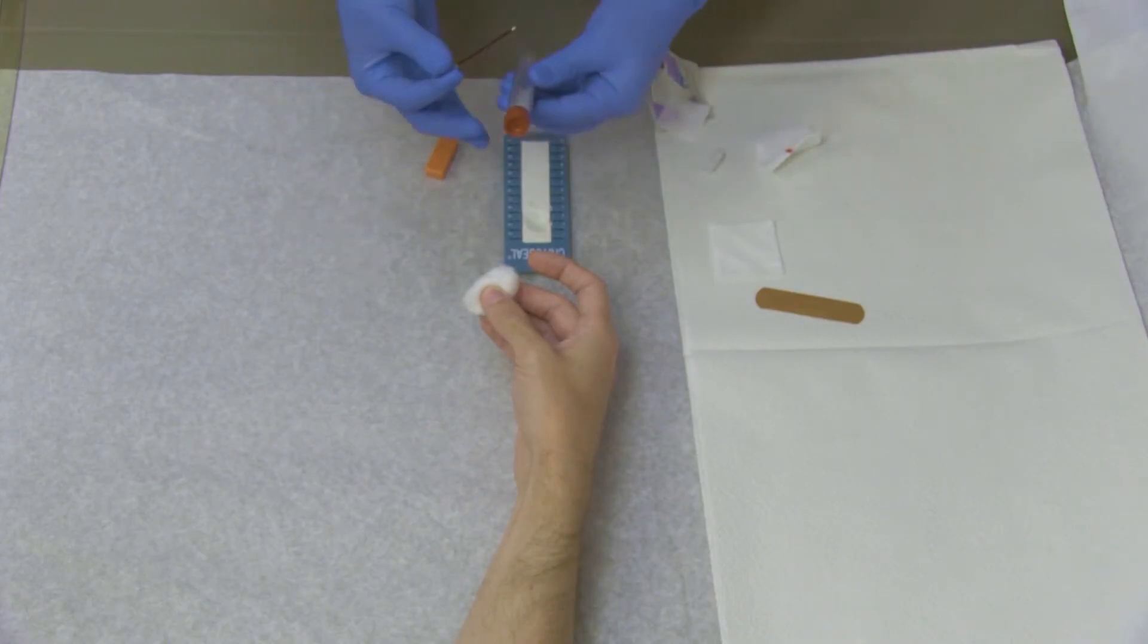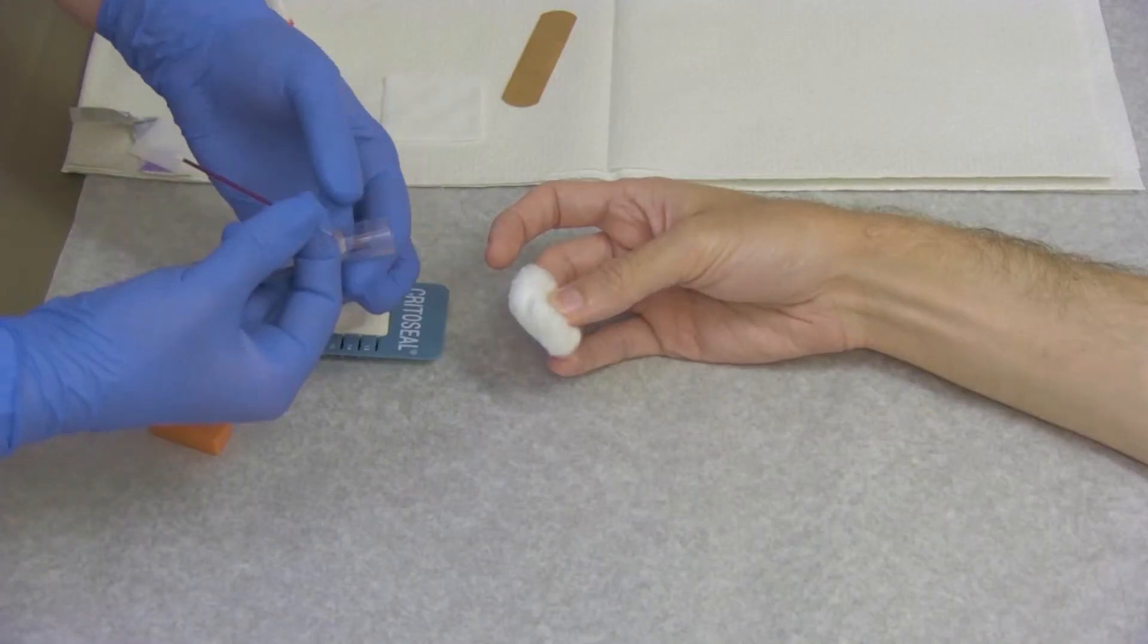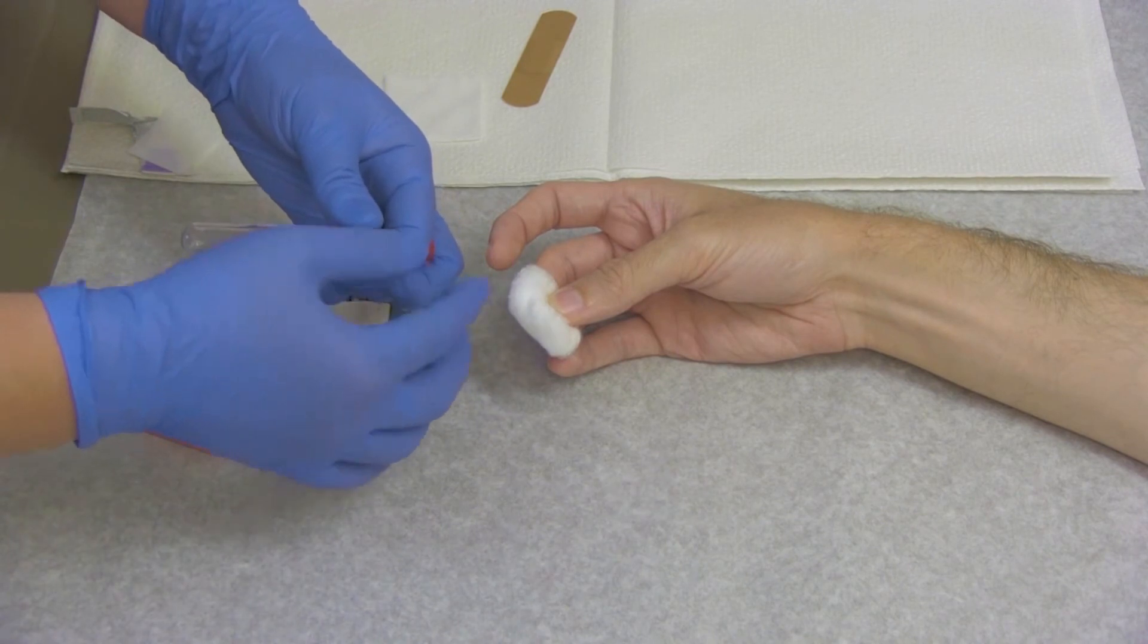Dispose of gauze and cotton balls, gloves, and mask in the biohazard container. Place the filled tubes into either the urine cup and screw the cap on, or the red tube and replace the red stopper. Then label the cup or the tube.